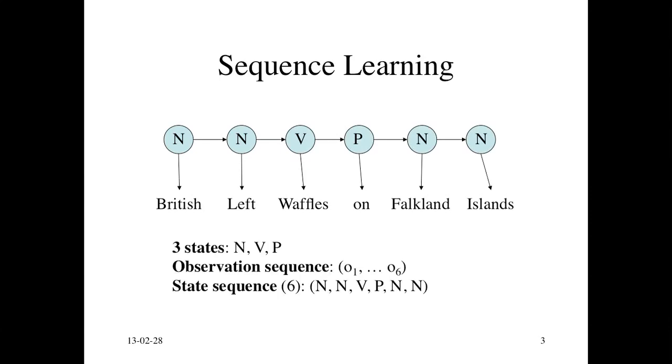Then goes to a noun state, generates Falkland, and then noun state generates islands. So there are three different states: N, V, and P. There are six observation symbols. They call them observation symbols to generalize from words, because sometimes they're characters, sometimes they're words, sometimes they could be other things.